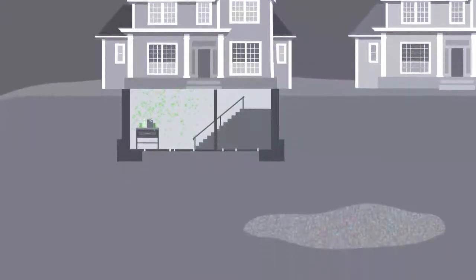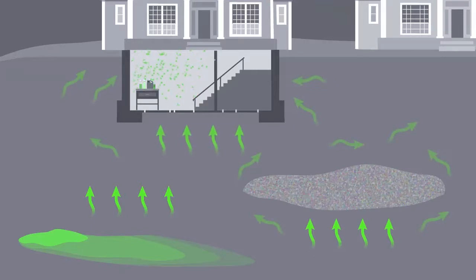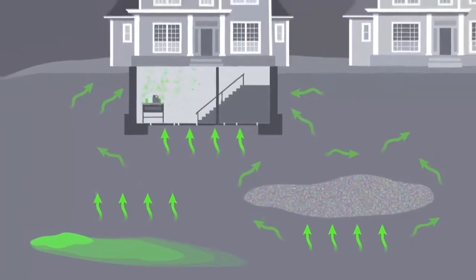TCE in contaminated soil, or more likely contaminated groundwater, can form a vapor that migrates through the soil into the home. This exposure route is known as vapor intrusion.